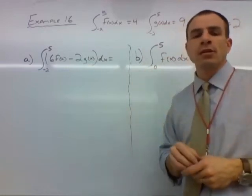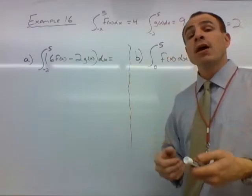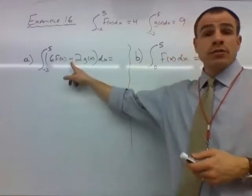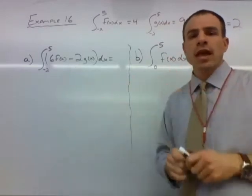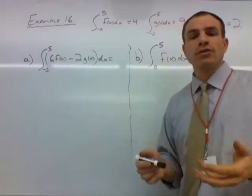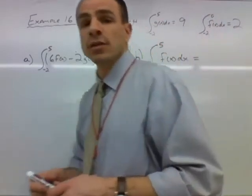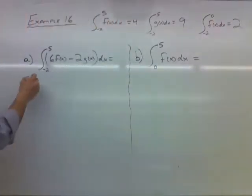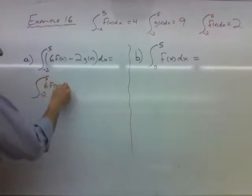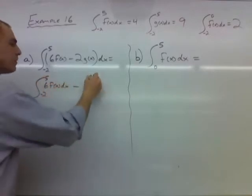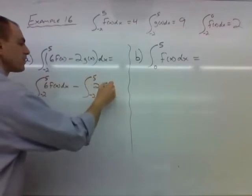One of the properties that we talked about in the previous video was about how if we are adding or subtracting two terms we can break that one expression into two expressions involving the definite integral. We see subtraction so we can make this the integral from negative 2 to 5 of 6f(x)dx minus the integral from negative 2 to 5 of 2g(x)dx.